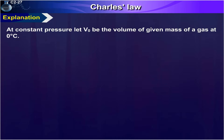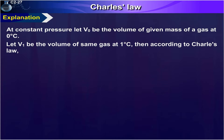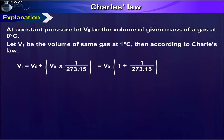Explanation. At constant pressure, let V₀ be the volume of a given mass of a gas at zero degrees Celsius. Let V₁ be the volume of the same gas at 1 degree Celsius. Then according to Charles Law: V₁ = V₀ + V₀ × (1/273.15) = V₀ × (1 + 1/273.15).